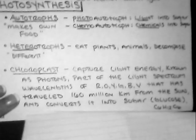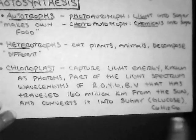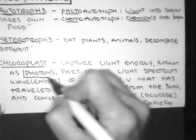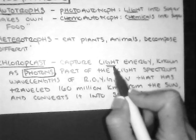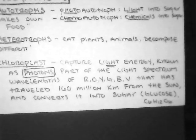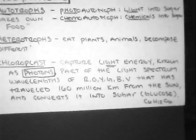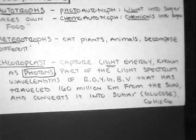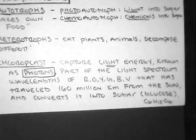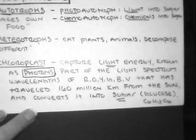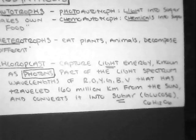Now a chloroplast, for those who want the definition, is an organelle that captures light energy known as photons. This is a new word you need to know. The light is known as photons, part of the light spectrum of wavelengths, your ROYGBIV. This light has traveled 160 million kilometers from the sun to our planet. And these plants with teeny tiny microscopic dots of chloroplast can take that photon of light that's untouchable to us and convert it into a molecule of sugar. Plants are literally magicians.